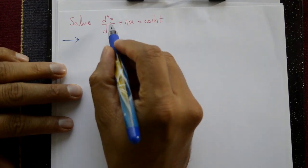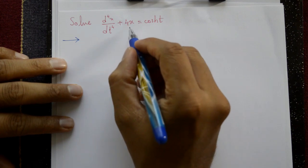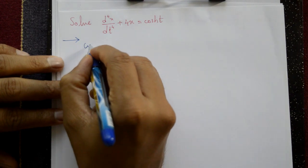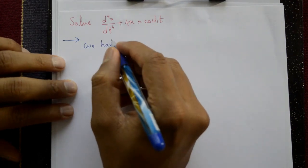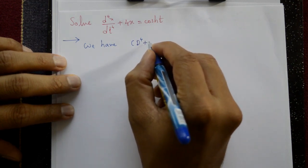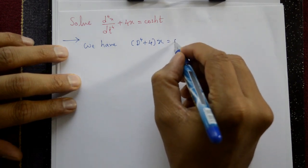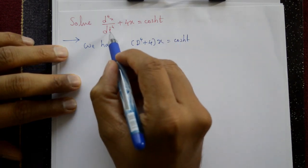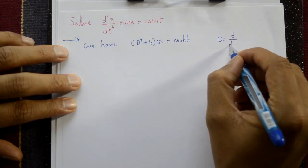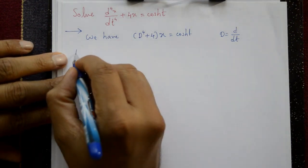Solve d⁴x/dt⁴ + 4x = cosh(t). We have D⁴ + 4 into x equal to cosh(t), where t is the independent variable and D stands for d/dt.